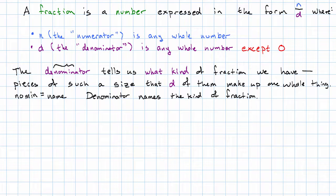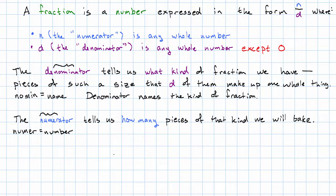Then the numerator tells us how many pieces of that kind we will take. Again, numerate. This word part, this numer part, means number. When you see that numer in an English word, you're referring to counting something. We can think about that in terms of counts, as we saw before. Each piece of the pizza was an eighth, and then we counted how many of these eighths we were taking.